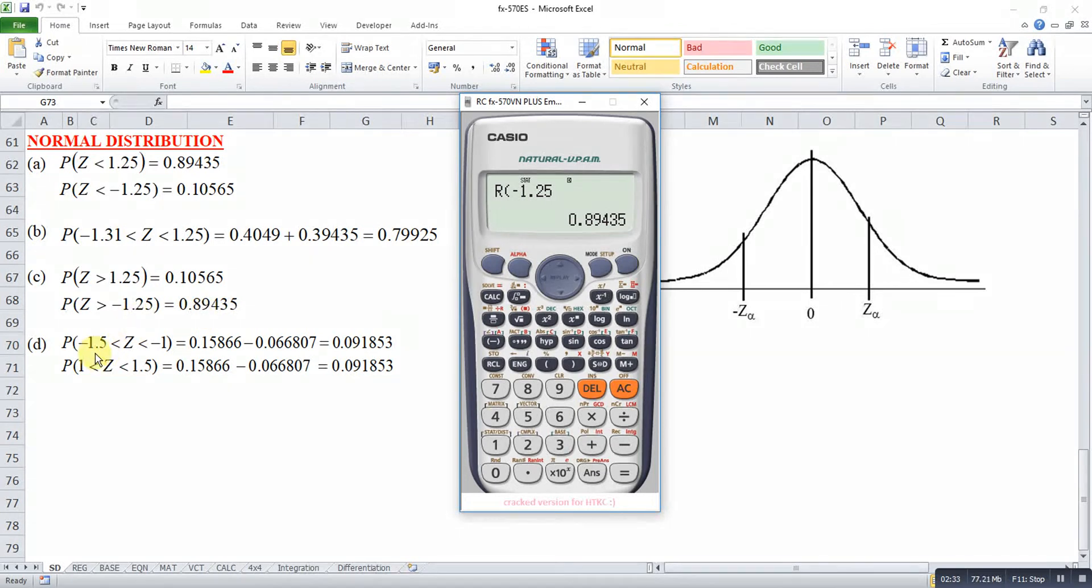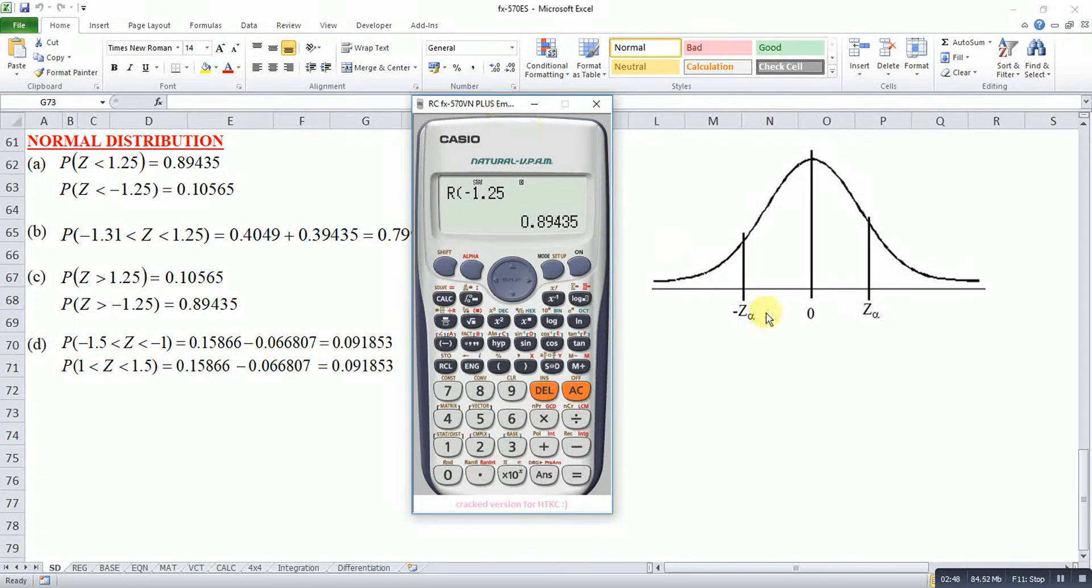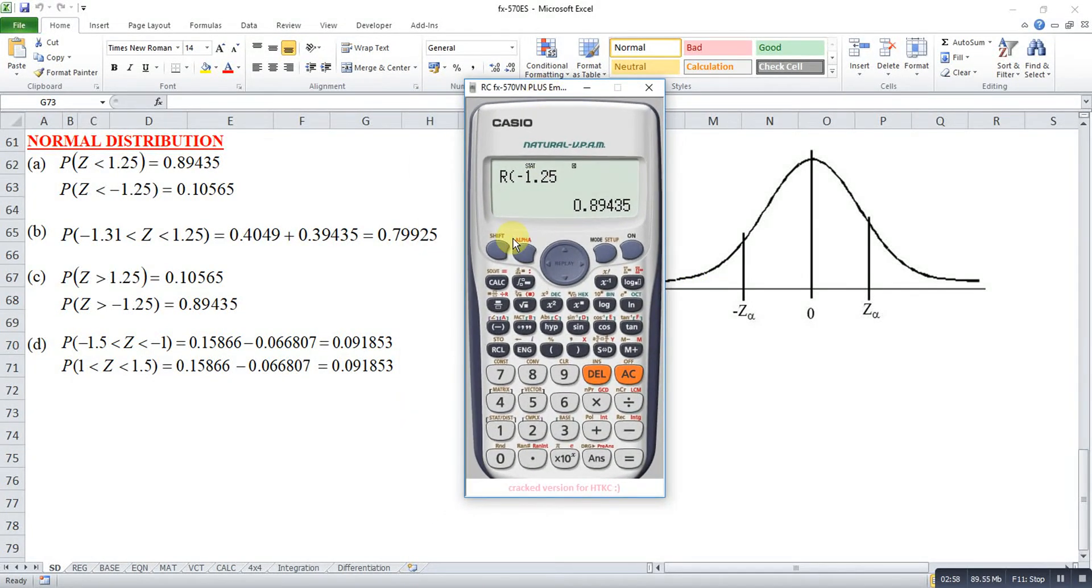Then we go to the part from a negative z-score to a negative z-score. So it's actually, we can use left tail, which means that we take a particular z-score and minus the other z-score.